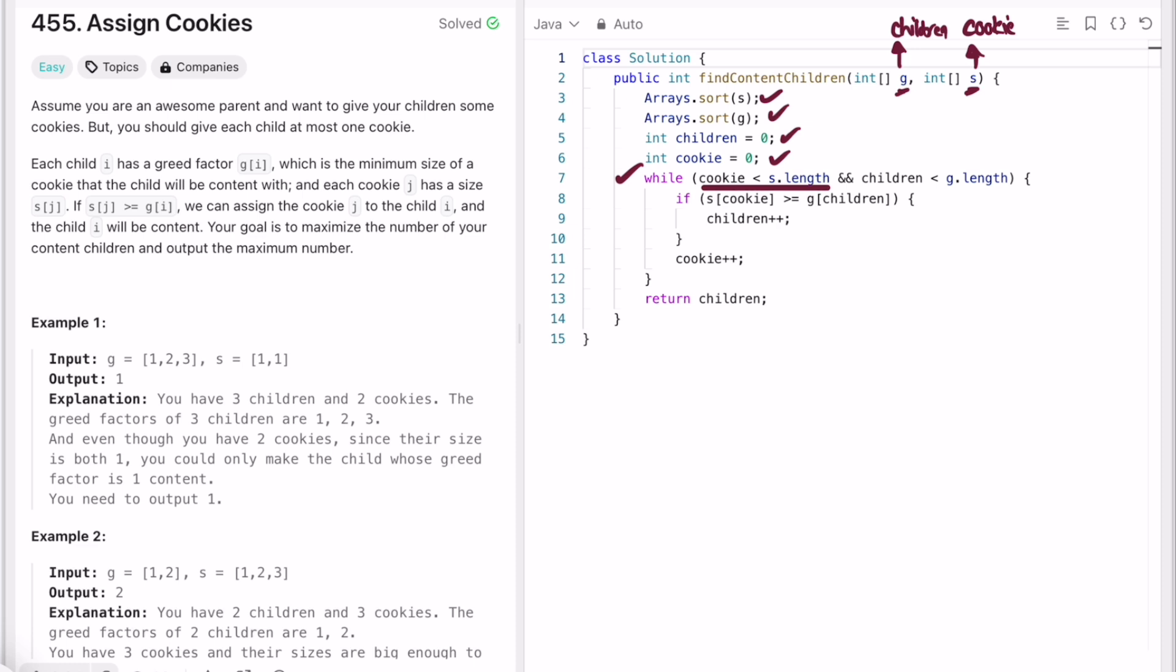I'm using a while loop where cookie will iterate until it's less than length, from start to end. Child will also iterate from zero to end. I'm checking the boundaries until when those pointers should iterate, and then I'm checking the condition: if s of i is greater than or equal to g of i, only then we increment the child pointer, which means we are assigning that cookie to that child. If that is not the case, we only increment that cookie.